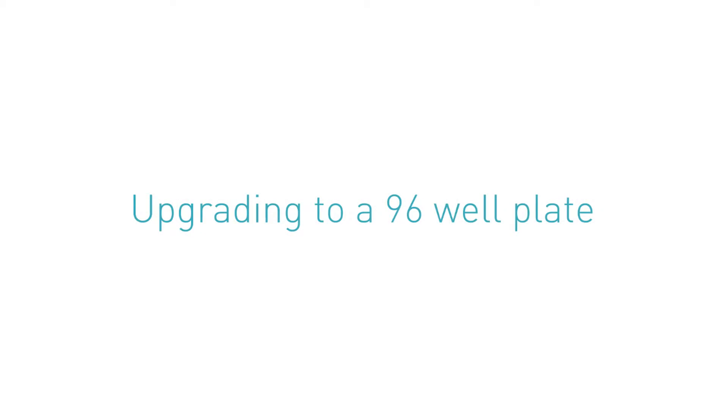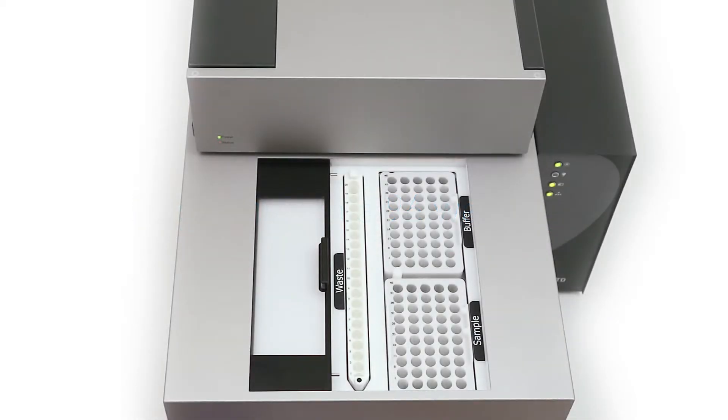Upgrading to a 96 Well Plate. Gently pull the vial tray out of the autosampler and put to one side.